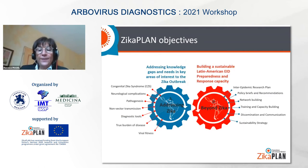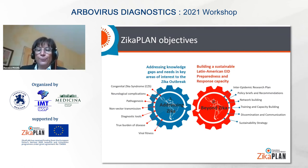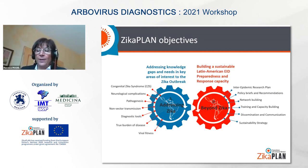This international initiative aims to respond to the Zika virus epidemic and its public health challenges. There are two main objectives. The first one is to fill gaps and strengthen knowledge about the Zika virus to better understand the disease, prevent its spread, and support affected populations. The second one is to build a sustainable response capacity in Latin America for Zika and also for other emerging infectious diseases.